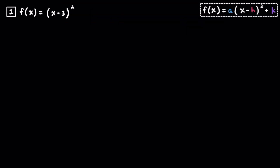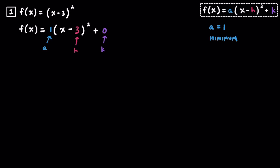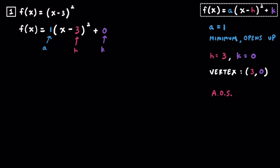In example one we have the quadratic function f of x is equal to the quantity of x minus 3 squared. Rewriting this in vertex form with a, h, and k, we can see that a is equal to 1, h is equal to 3, and k is equal to 0. Because a is equal to 1, that's a positive value, so we have a minimum and the parabola opens up. Because h is equal to positive 3 and k is equal to 0, our vertex is going to be located at 3 comma 0, and our axis of symmetry is x equals 3.